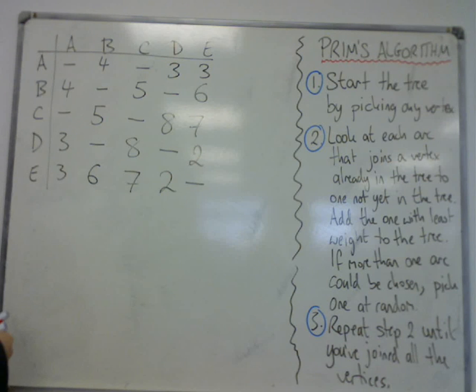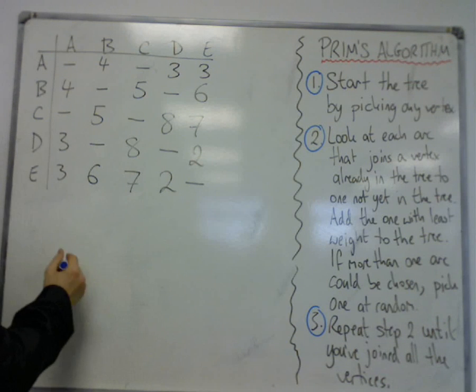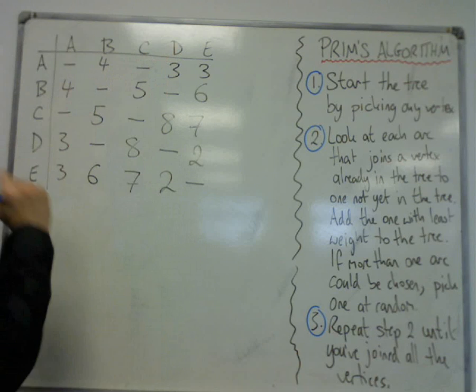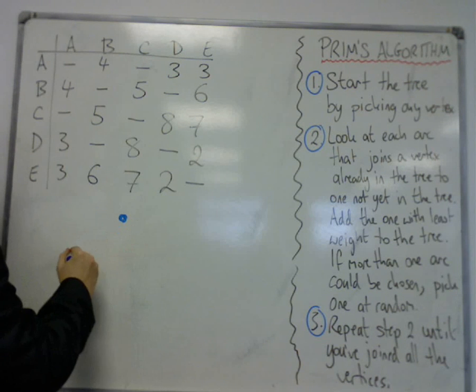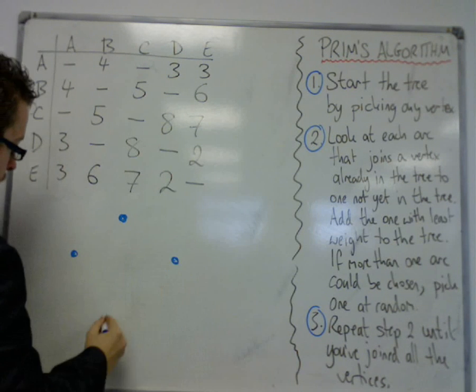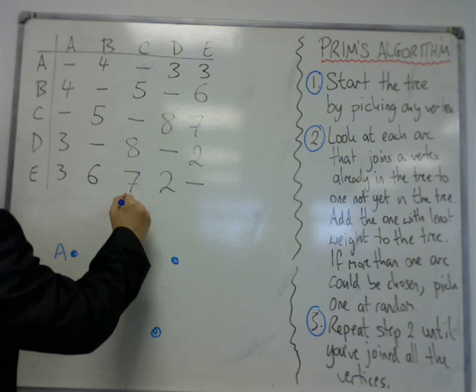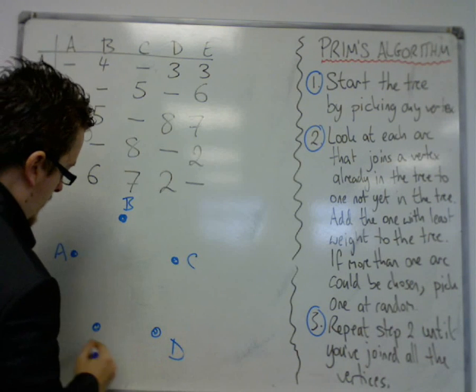You could represent this as a graph. So there are five vertices: A, B, C, D, E.